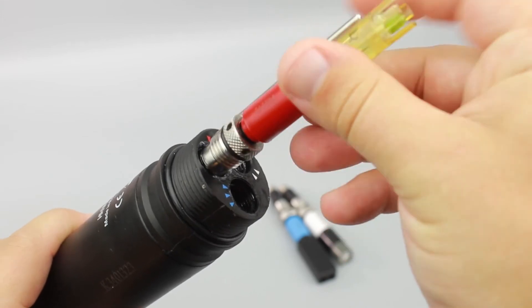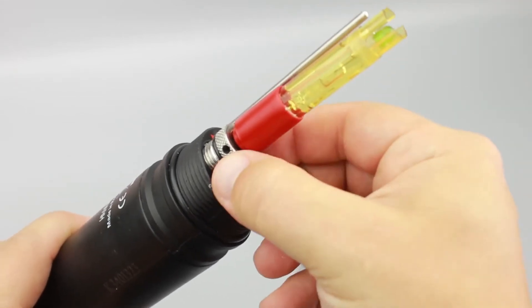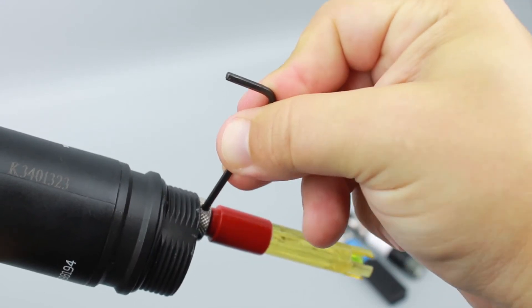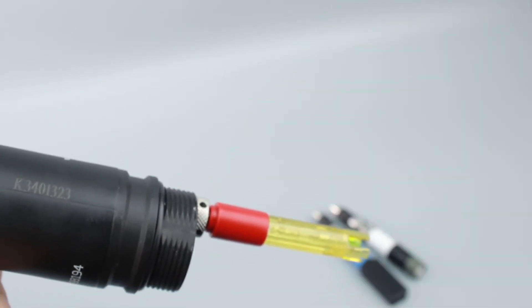Position the connector key on the sensor towards the center of the probe. Make sure the sensor is connected correctly before tightening the locking threads. Repeat for the remaining two sensors.